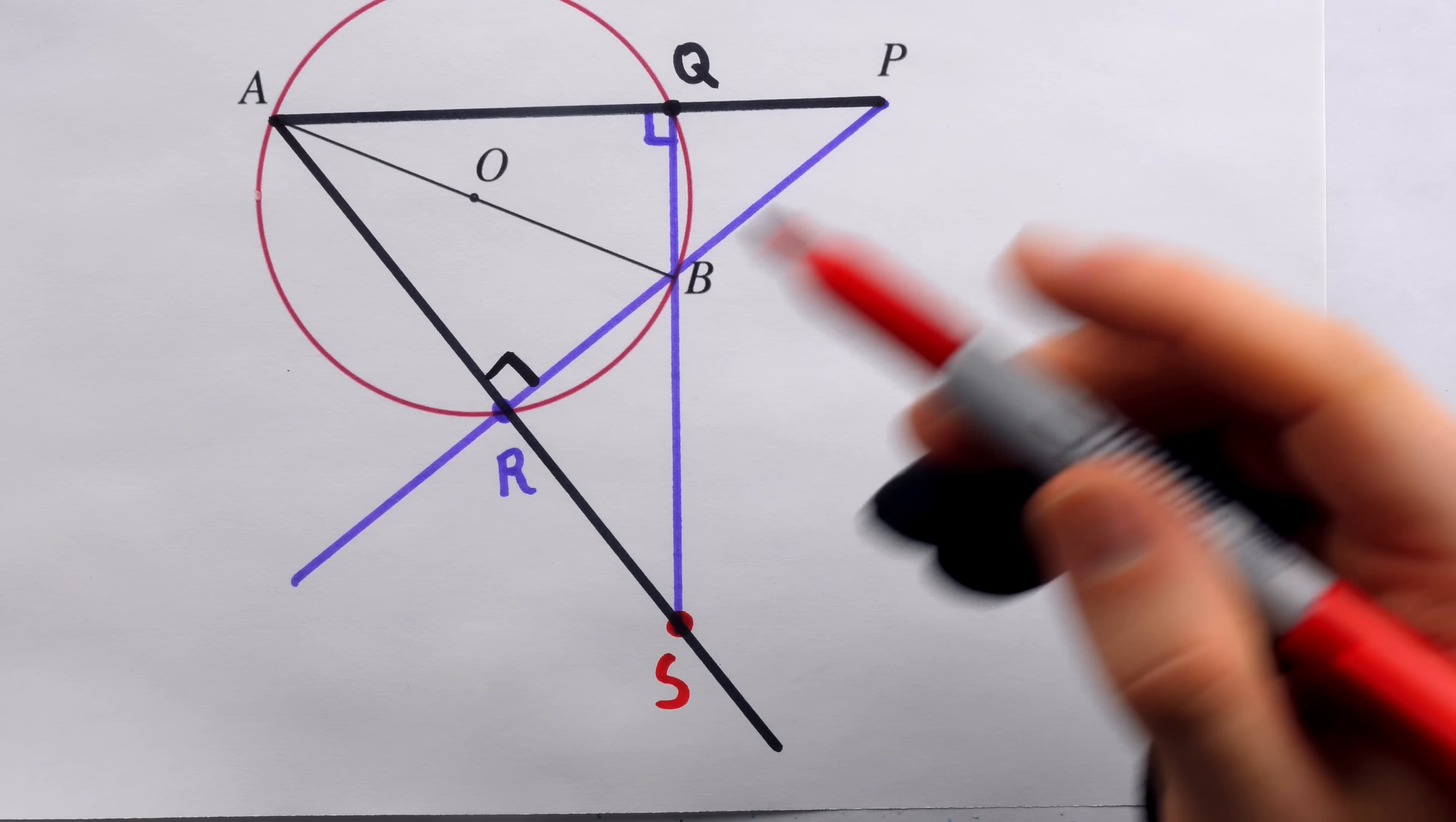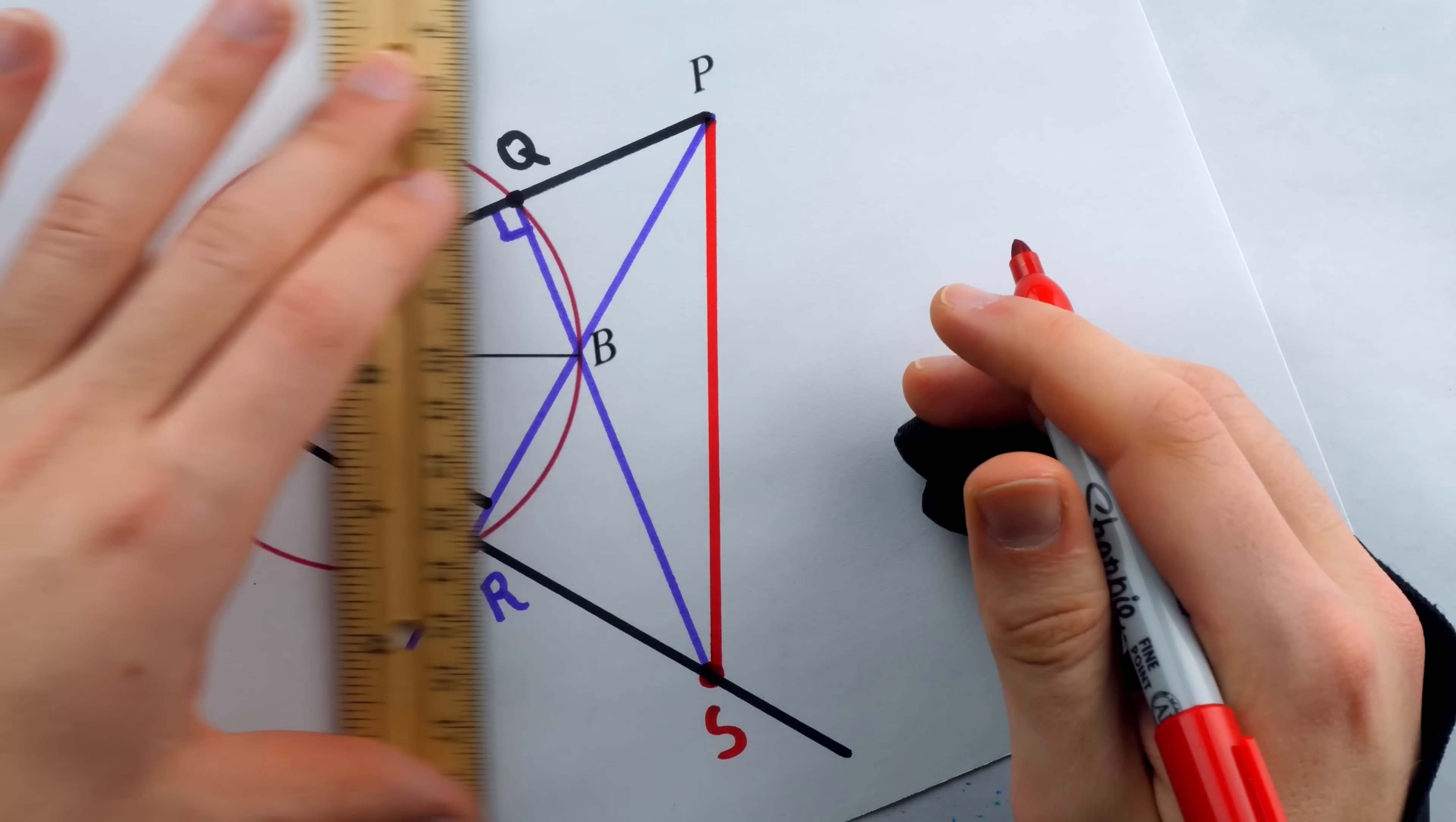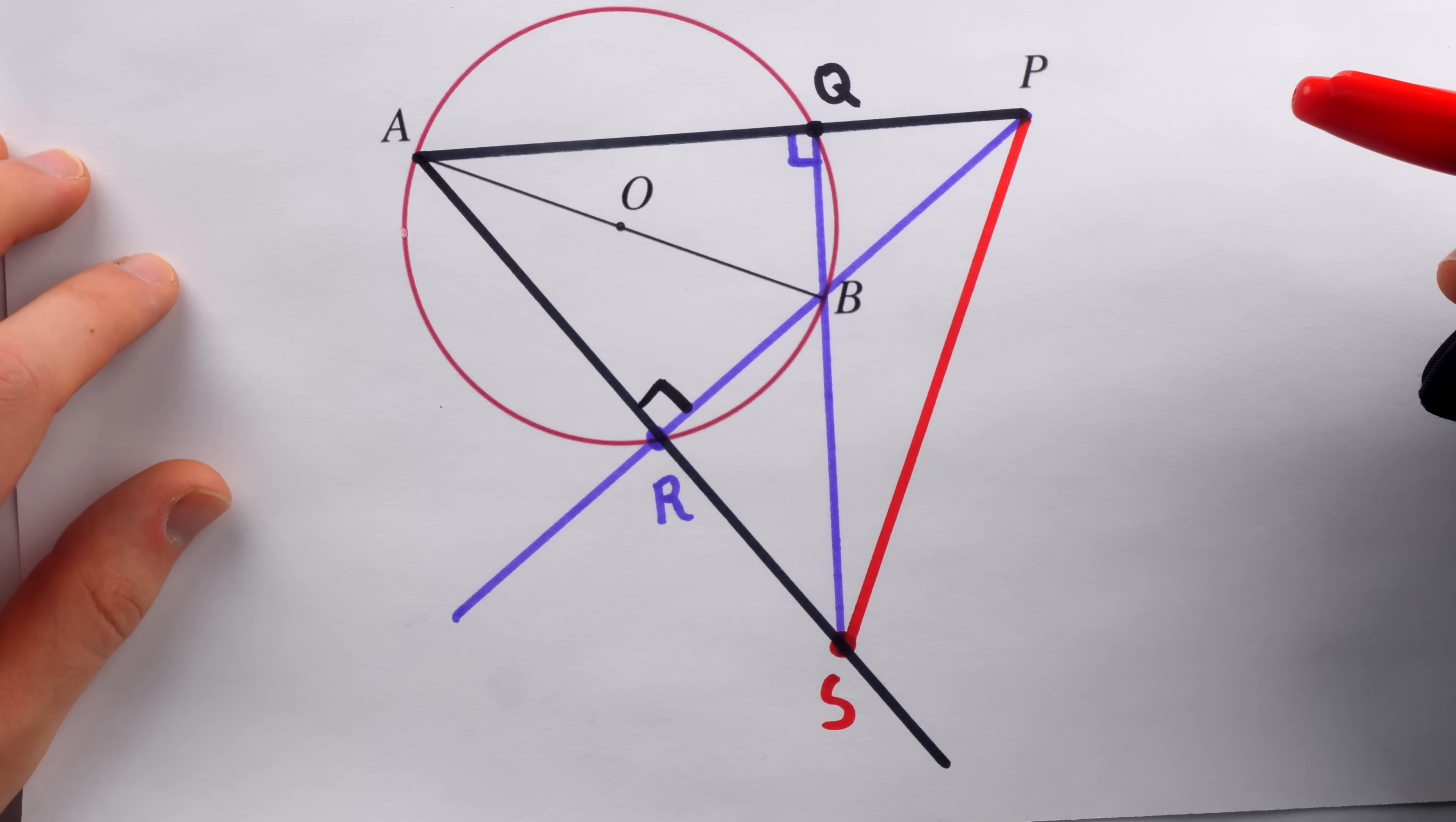We are going to draw this segment in red because it is the key and this segment is the one that goes from P to S. And now we have this triangle A, P, S which, like every triangle, has three altitudes which must intersect at a common point called the orthocenter.